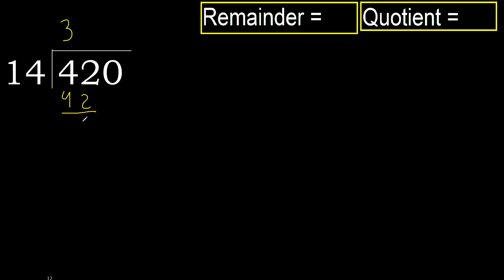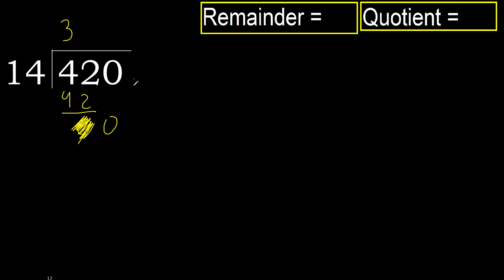Subtract, then bring down the next digit. Eliminate the 0 on this side. 0 is less than 14, therefore next — but there is no number, therefore finish it.